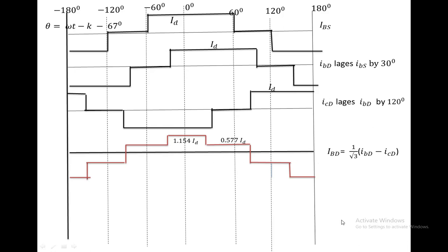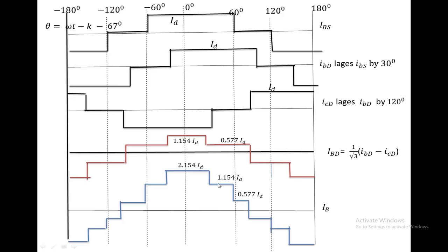Ultimately, IB equals the sum of the IBS waveform and the IBD waveform. Adding these two waveforms at every instant gives the IB waveform. If we observe this IB waveform, it has both steps and is almost a sine wave, near to the sine wave. Applying Fourier analysis, the harmonics in this phase B current will be less than the harmonics in the phase B current with a 6-pulse converter.